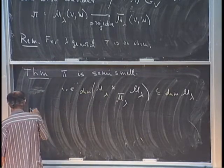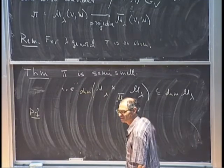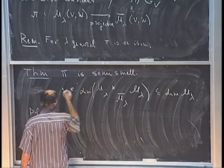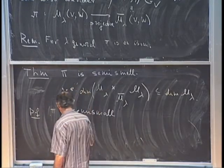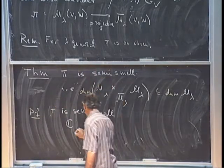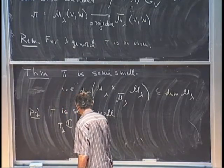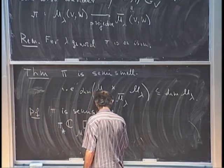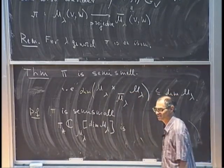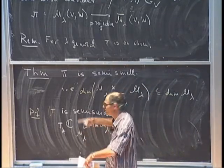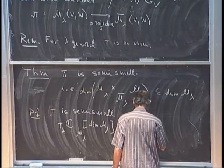Reformulation: pi is semi-small if and only if the push-forward of the constant sheaf on M_lambda (shifted by the dimension of M_lambda) under pi is a perverse sheaf. This follows from looking at the definitions of a perverse sheaf, which impose cohomological bounds — and computing the dimension of the fiber product gives the same bound.